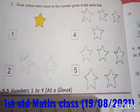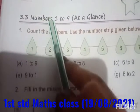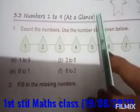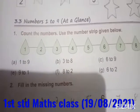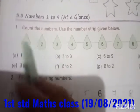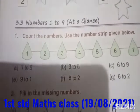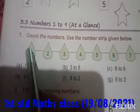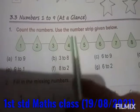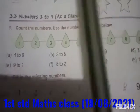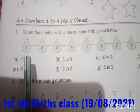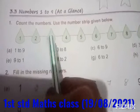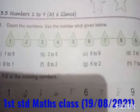Now, come to section 3.3. Numbers 1 through 9 — just at a glance. You have to glance and remember, or you can read. They have given number strips: 1, 2, 3, 4, 5, 6, 7, 8, 9. You have to count as per the given strips — from 1 to 9.